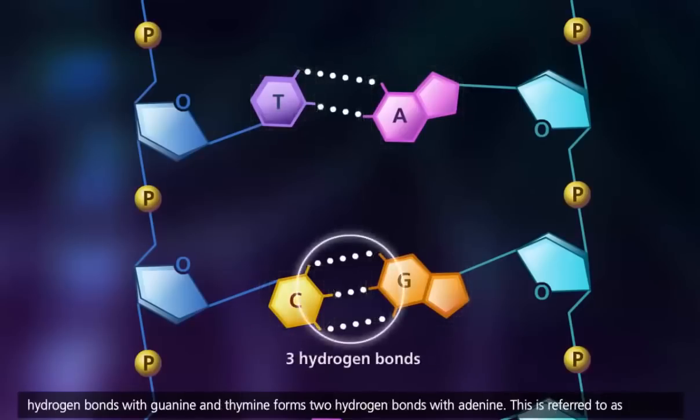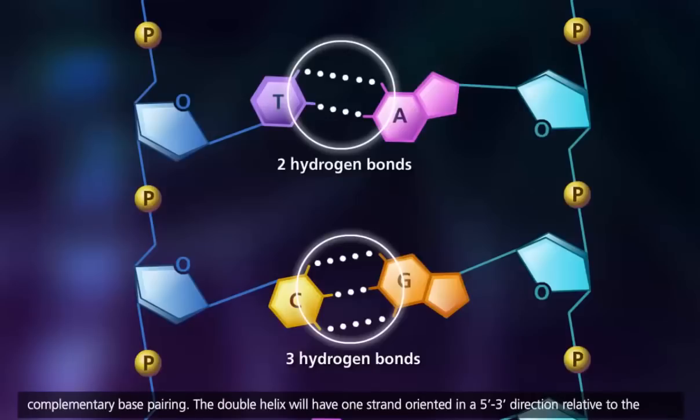Cytosine forms three hydrogen bonds with guanine, and thymine forms two hydrogen bonds with adenine. This is referred to as complementary base pairing.